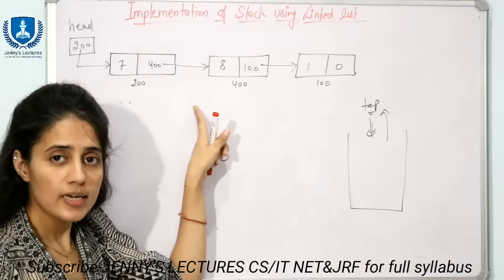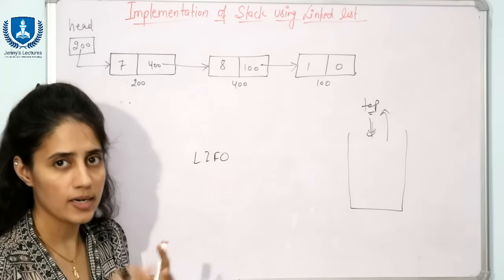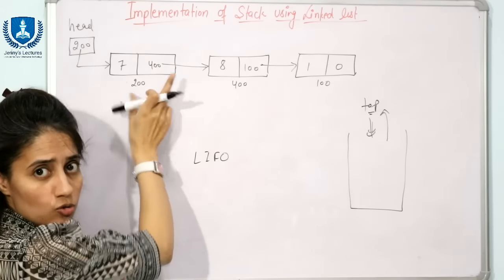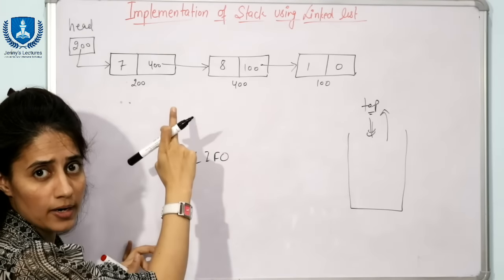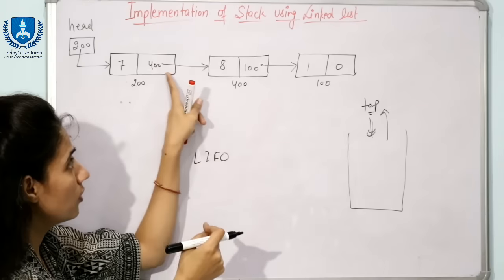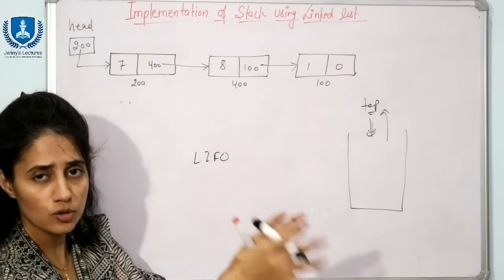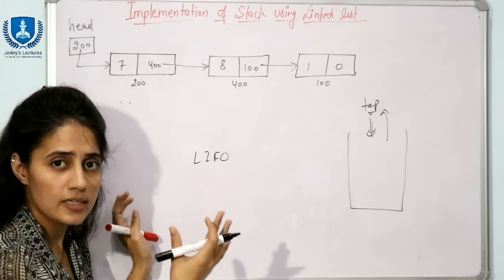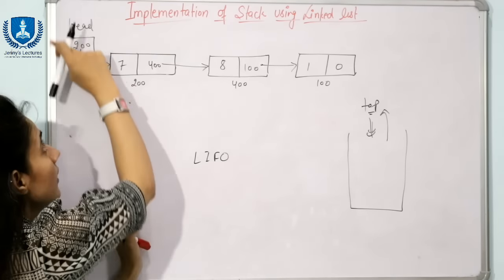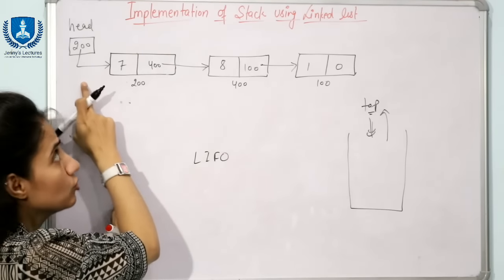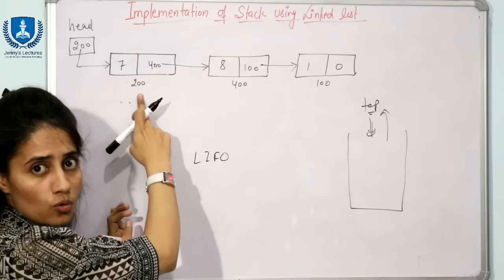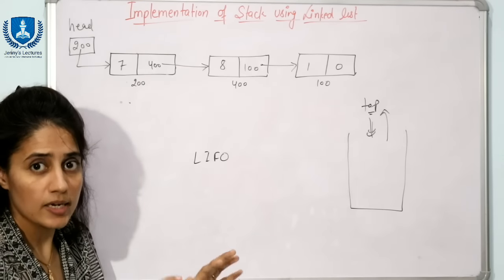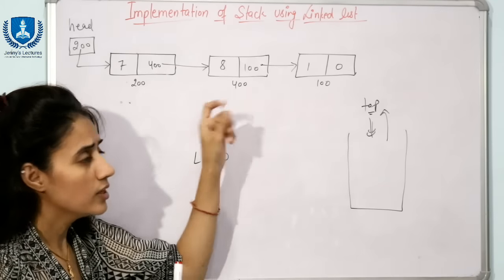When I say linked list, I mean singly linked list by default. A node in the linked list has two parts: a data part and an address part. The address or link part contains the address of the next node. The last node contains null. The head pointer contains the address of the first node. When you program the linked list, you only have the head pointer.